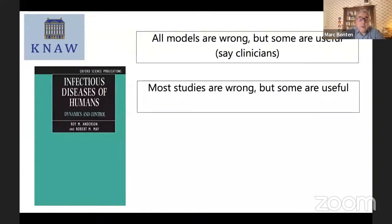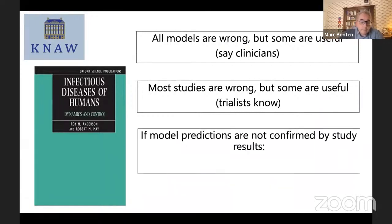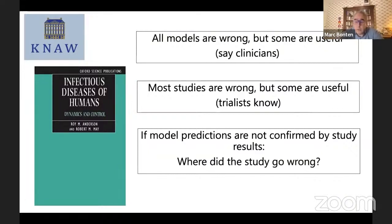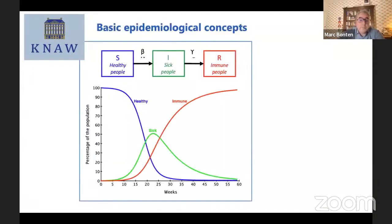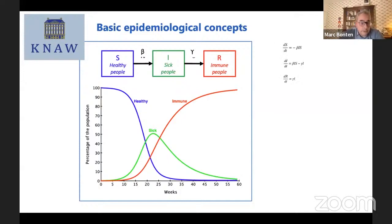Clinicians usually say that all models are wrong but some are useful, and as a clinical trialist I'd say most studies are wrong but some are useful. The combination means that if model predictions are not confirmed by study results, the immediate question is where the study went wrong, because the only things that can go wrong in models are the assumptions. The COVID pandemic has made us all a kind of mathematical modeler of infectious diseases.